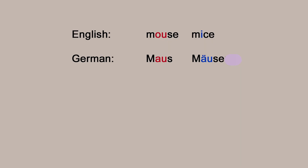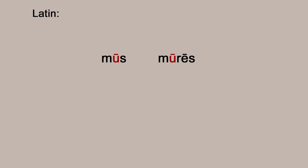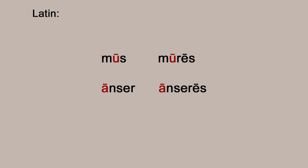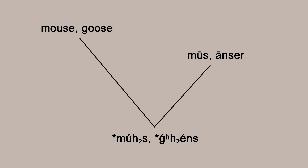You get this vowel alternation pattern throughout the Germanic languages, but you don't find it when you go beyond Germanic to something like Latin. Latin has mus but the plural mures, and you can see the u stays the same in singular and plural. For goose, Latin has anser and anseris — cognate with the English word goose — but again no vowel alternation. English didn't get these words from Latin; they both inherited them from a common ancestor. That's good evidence this vowel alternation is a Germanic thing.